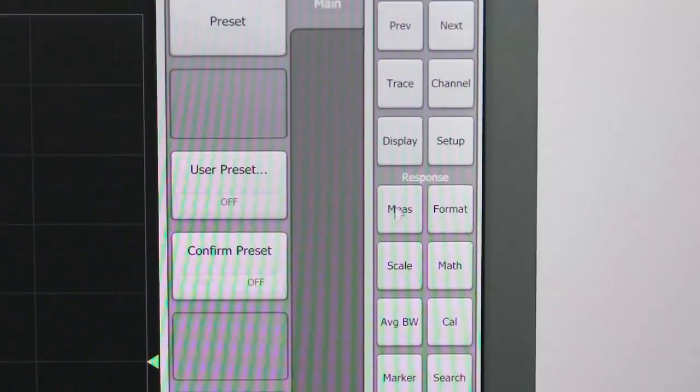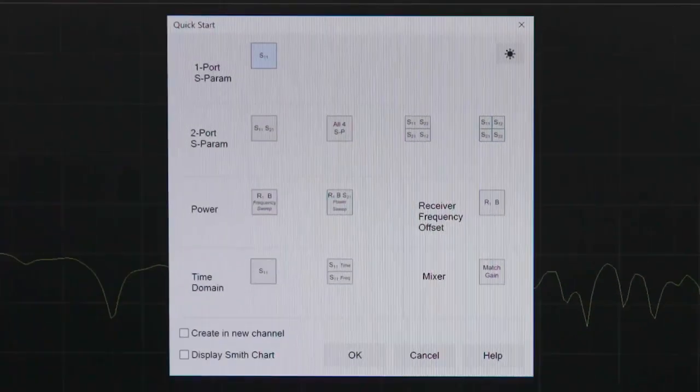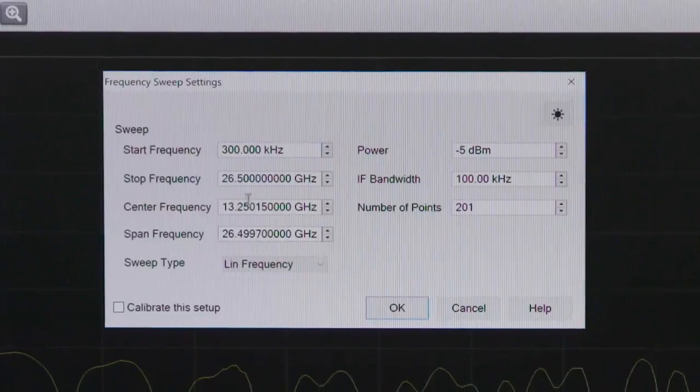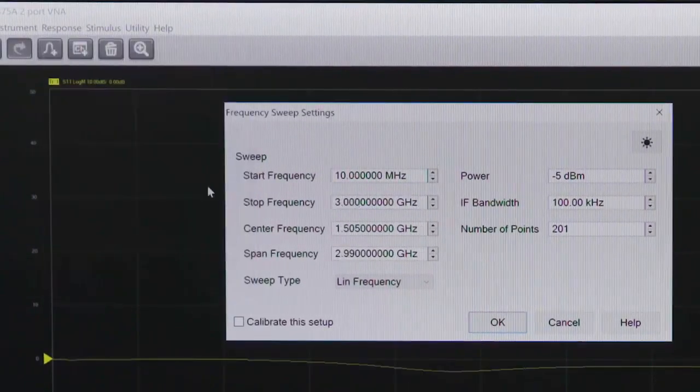We'll go into the setup menu and select Quick Start to show the setup dialog. Since we are only working with one port here, I'll select the one-port S-parameter option. This is where you will need to enter your start and stop frequencies, sweep type, power level, and the other parameters for your test.